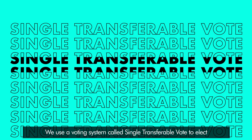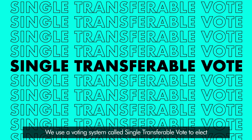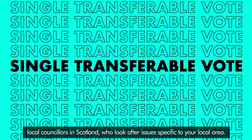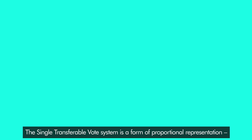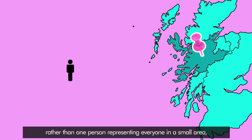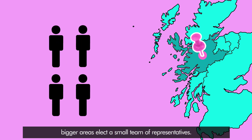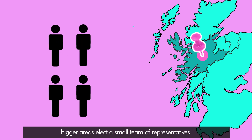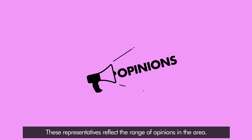Single Transferable Vote. We use a voting system called Single Transferable Vote to elect local councillors in Scotland, who look after issues specific to your local area. The Single Transferable Vote system is a form of proportional representation. Rather than one person representing everyone in a small area, bigger areas elect a small team of representatives. These representatives reflect the range of opinions in the area.